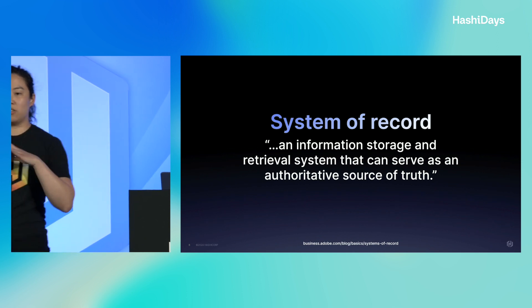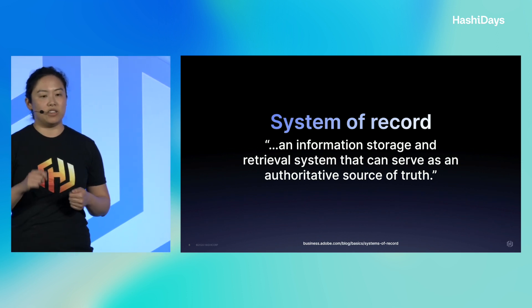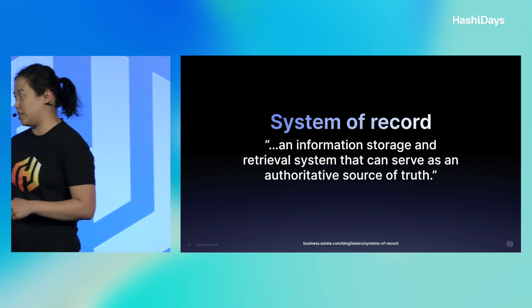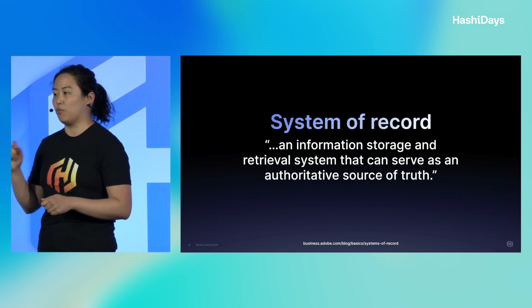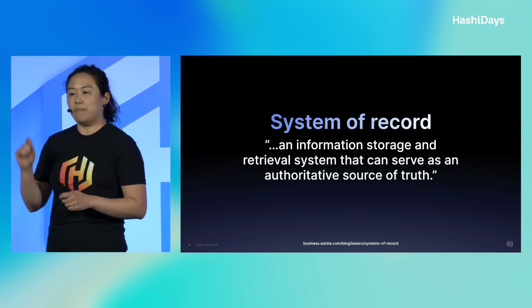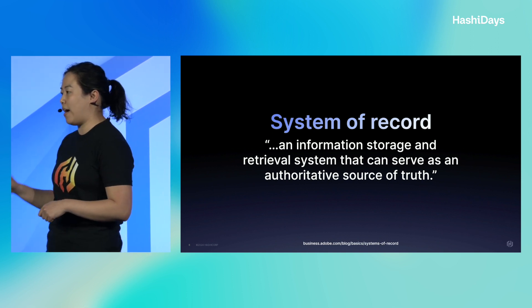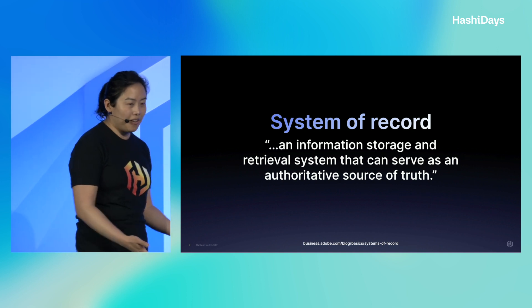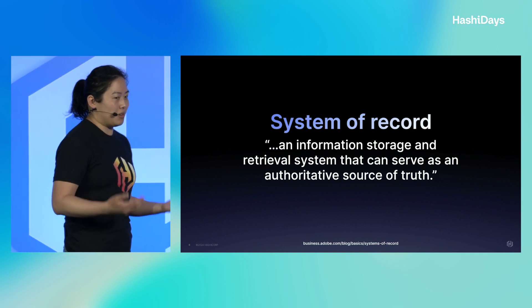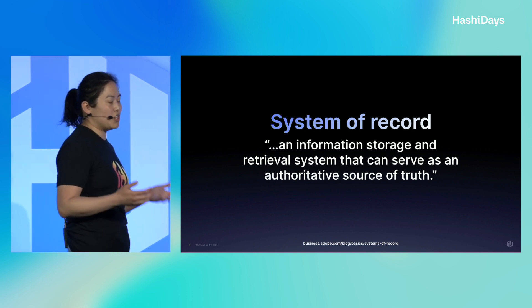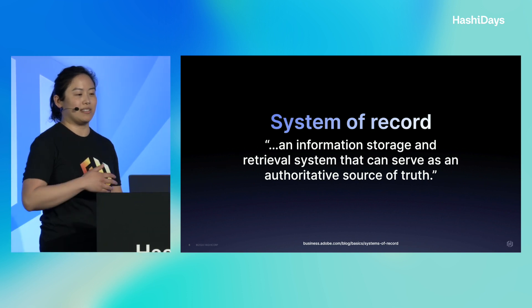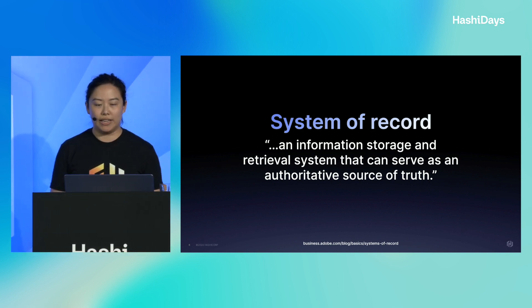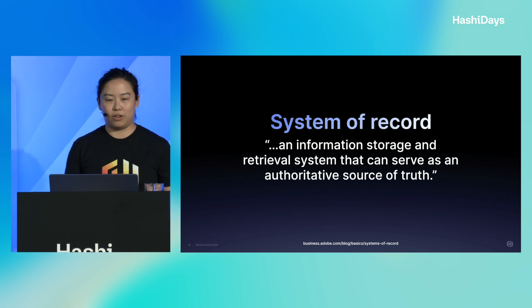The first step is authentication: are you allowed to access that production system? Can you access that AWS account or Azure tenant? The next is authorization: what do you have access to? Should developers have access to every service offering in their cloud service provider? The answer is no. Authorization is really important to ensuring governance in your environment. The final step is audit: when and what changes were made to production? There are many things people can do to infrastructure and security resources manually that don't get tracked at all.